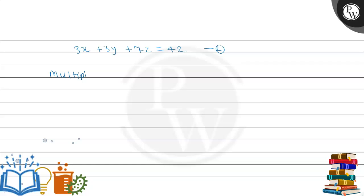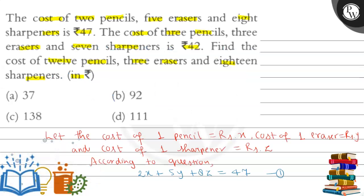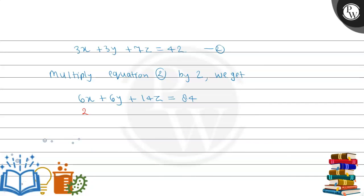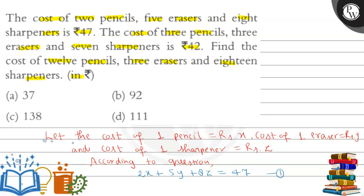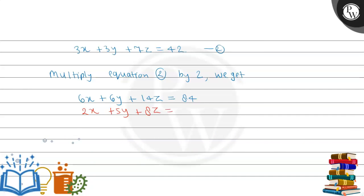Now multiply equation 2 by 2. We get: 6x + 6y + 14z = 84. The first equation is: 2x + 5y + 8z = 47. Now we subtract equation 1 from the multiplied equation 2.